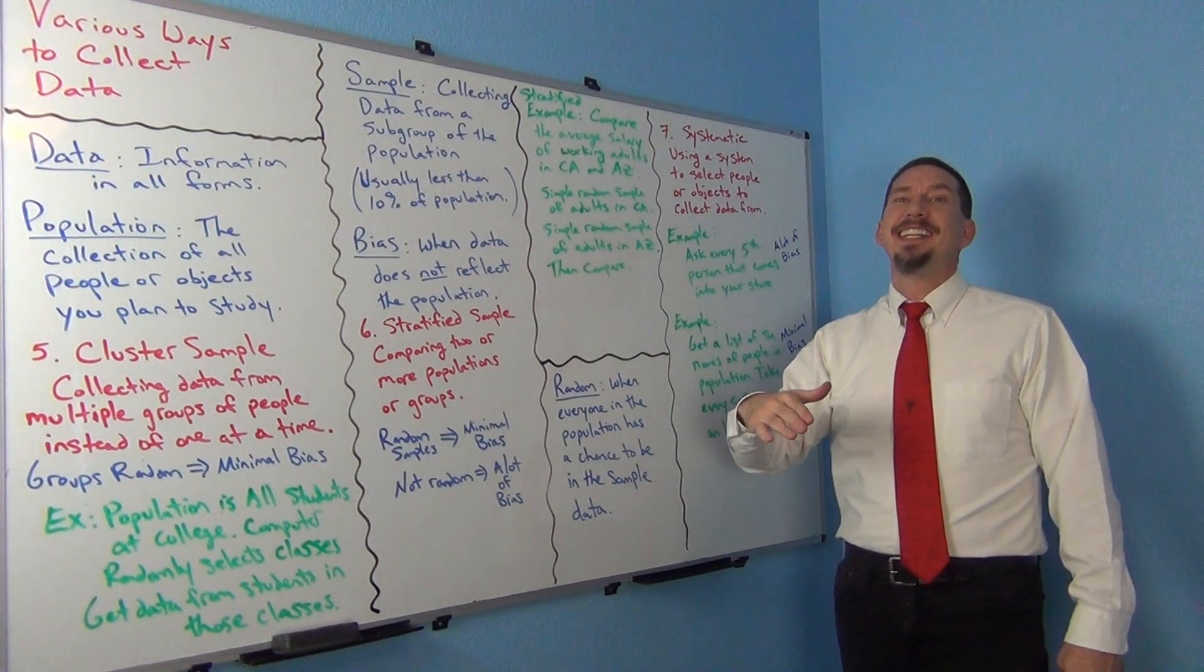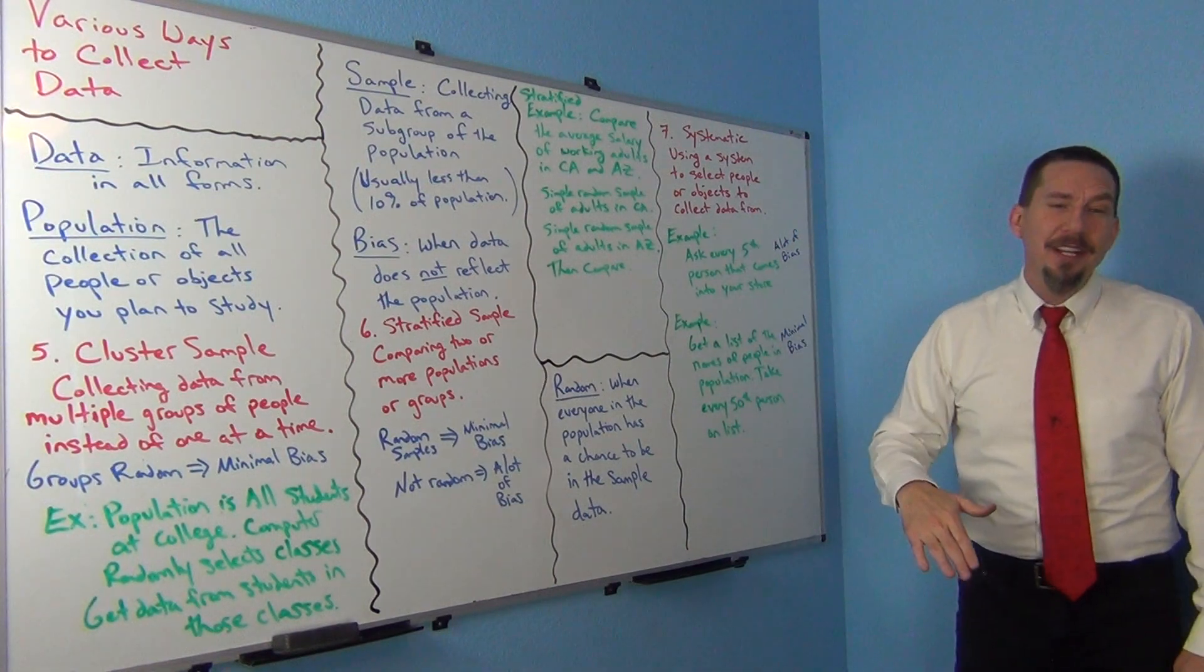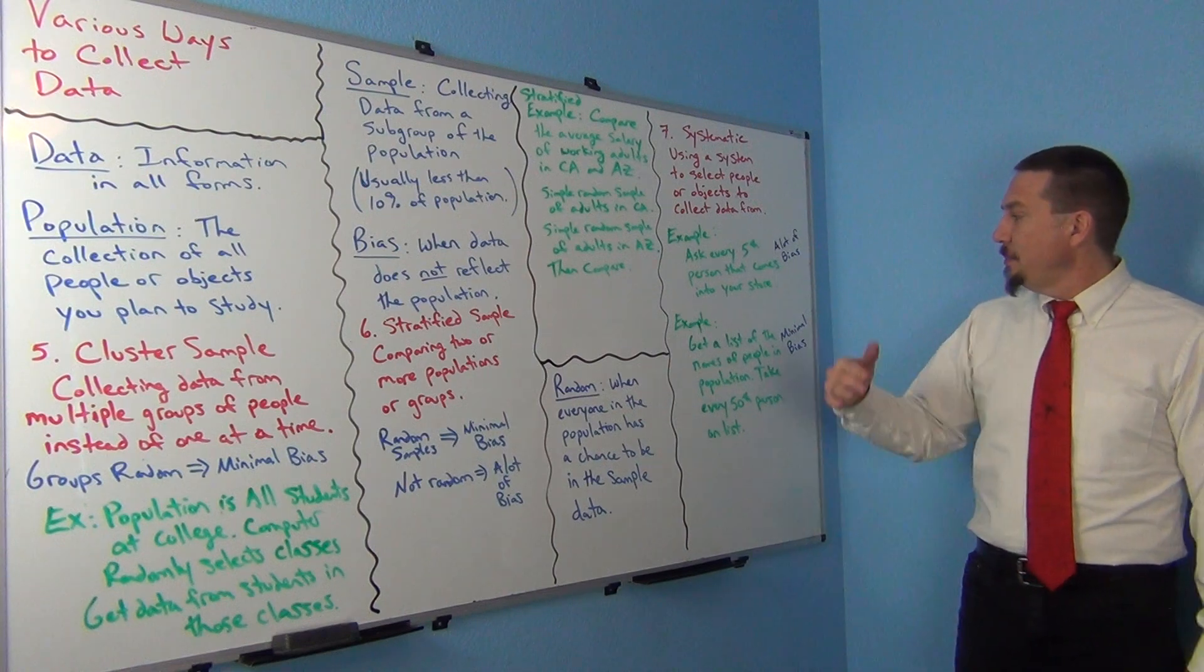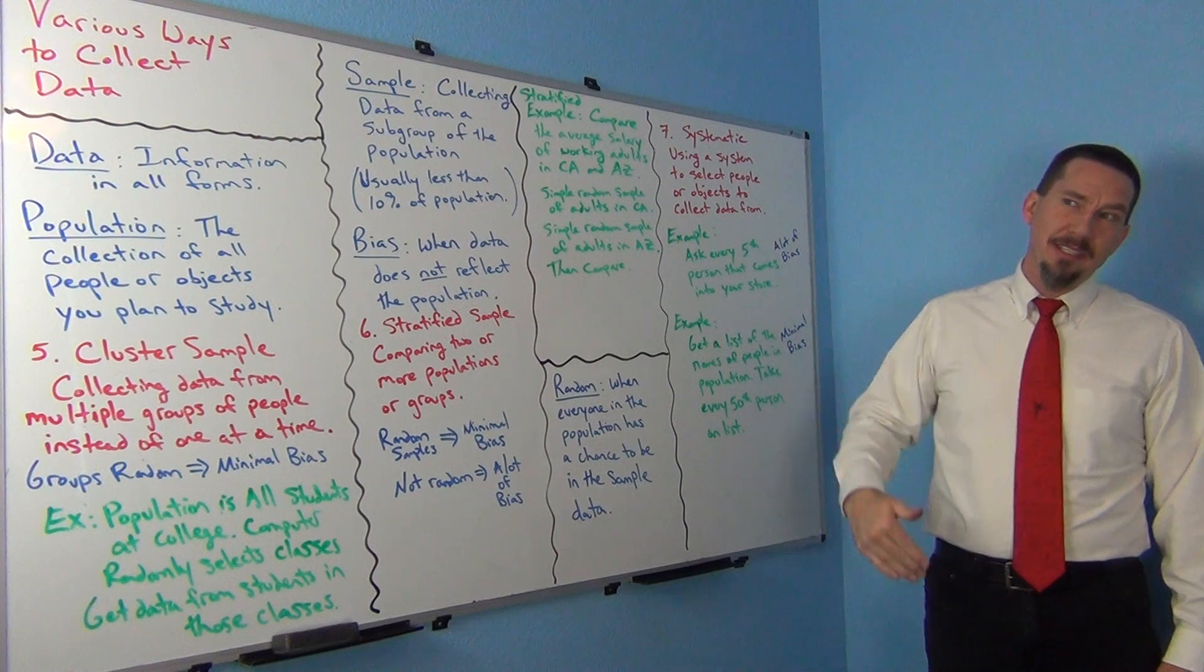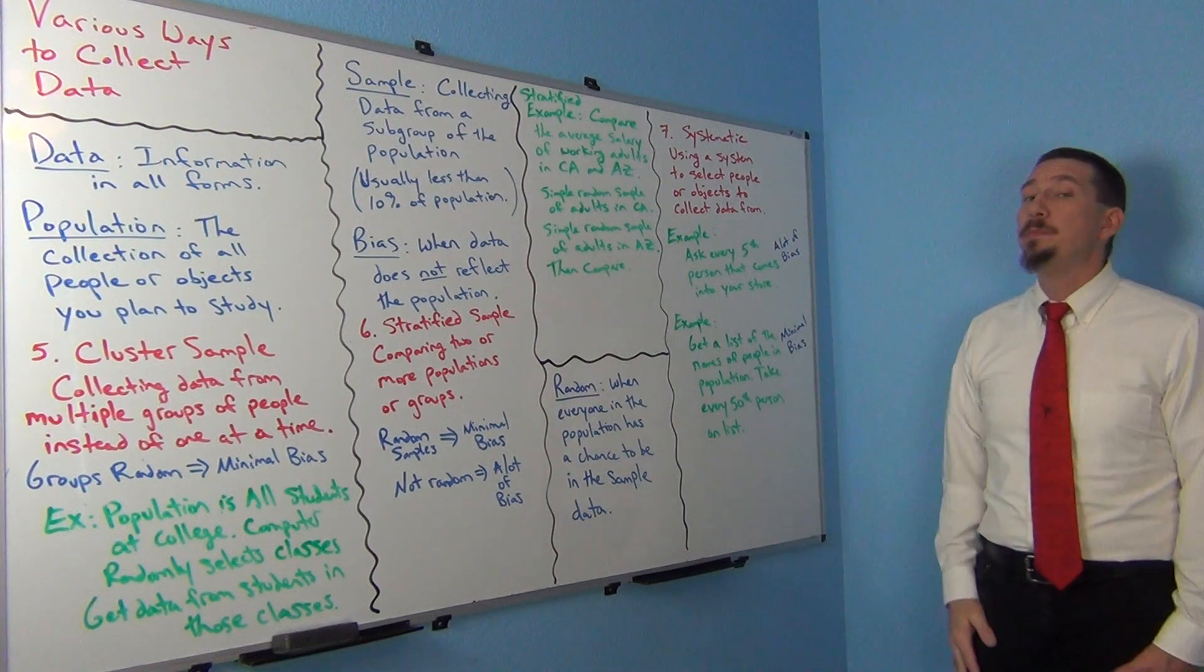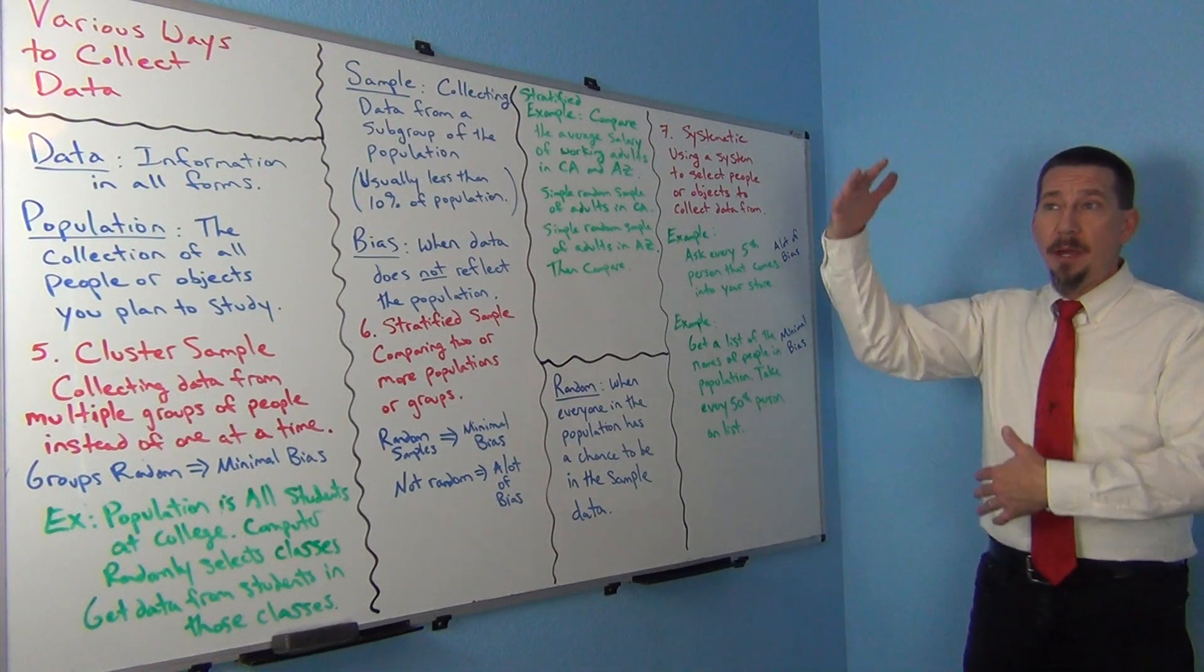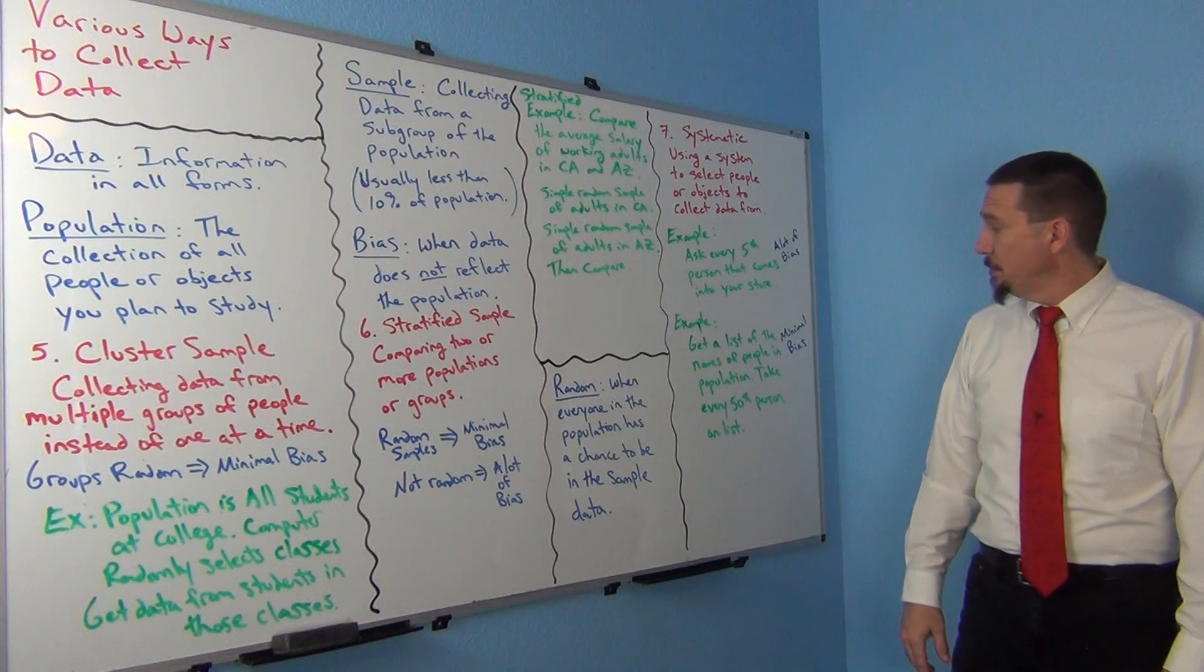They basically have a random choice for the first choice only and then use their system after that. And that actually would be a random sample because everybody on the population list would be chosen. In fact it would be a simple random sample.